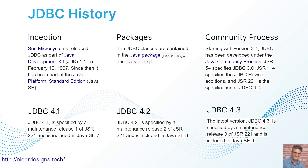A look at the history of JDBC. Sun Microsystems released JDBC as part of Java on February 19, 1997. Since then, it has been part of the Java platform. The JDBC packages are contained in java.sql and javax.sql. JDBC has been part of the Java Community Process starting with version 3.1. Down here we see which versions match with which release of Java.